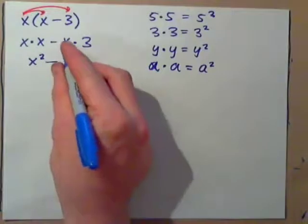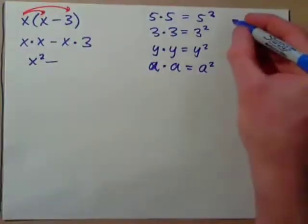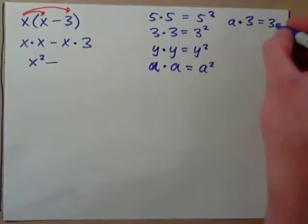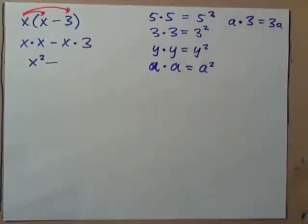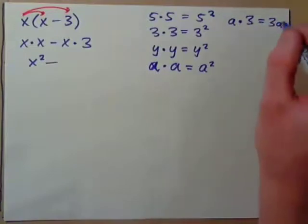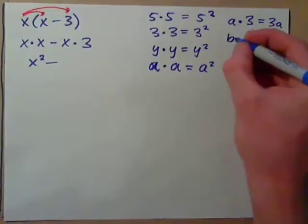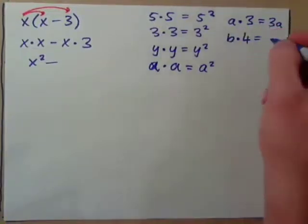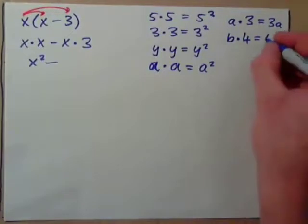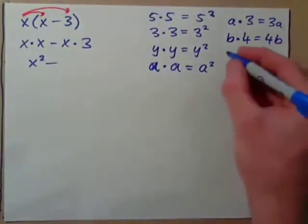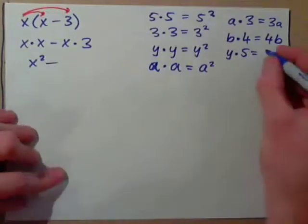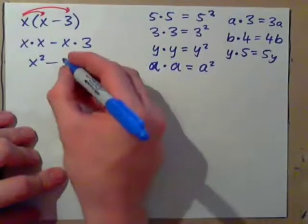So x times x gives x squared. Now for x times 3: if you had apple times 3, it's easier to write 3a — 3 apples — because it's more fluid language. You don't say 'an apple times 3 in my bag'; you say '3 apples.' Similarly, banana times 4 is just 4b, and y times 5 is just 5y. So the full result is x squared minus 3x.